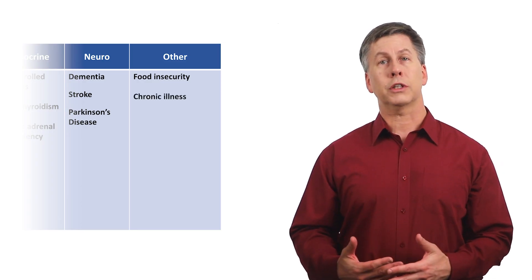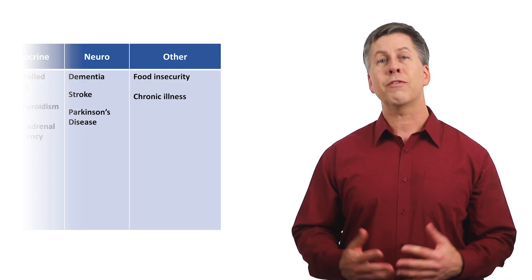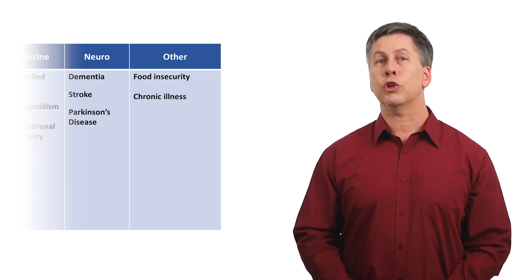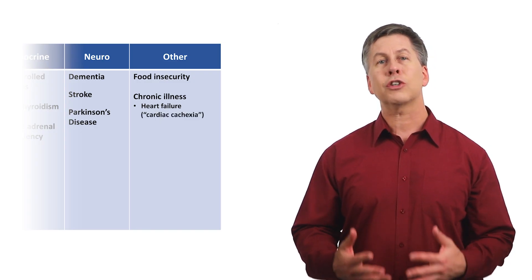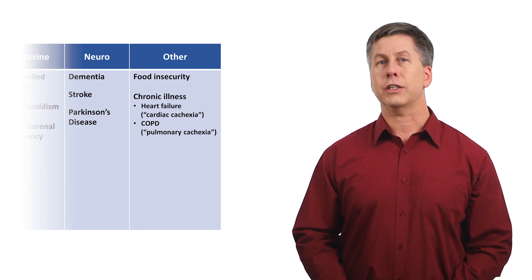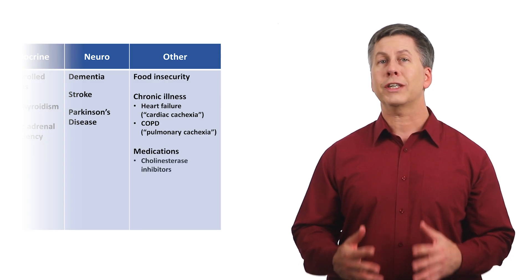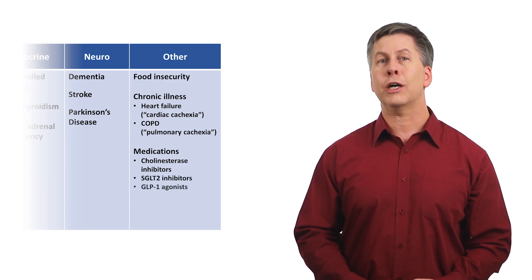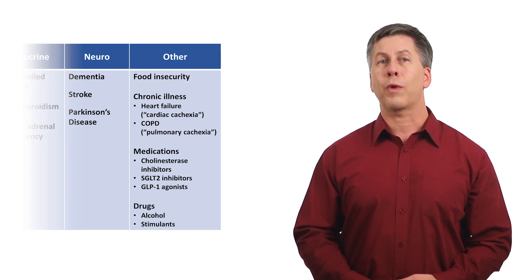Several chronic illnesses, which would seem to have no obvious mechanism by which they would necessarily lead to weight loss, nevertheless are classically associated with it, along with cachexia. This includes cachexia associated with advanced heart failure, known as cardiac cachexia, and that associated with COPD, known as pulmonary cachexia. Many medications are associated with unintentional weight loss, in particular, cholinesterase inhibitors such as donepezil, and the diabetes drugs within the categories of SGLT2 inhibitors and GLP-1 agonists. And last, alcohol and stimulant abuse are both associated with weight loss as well.